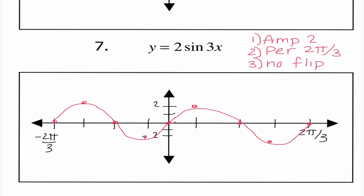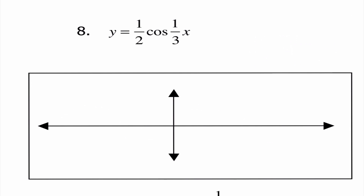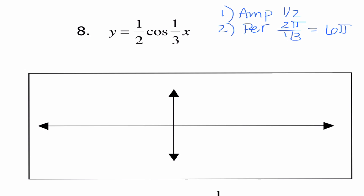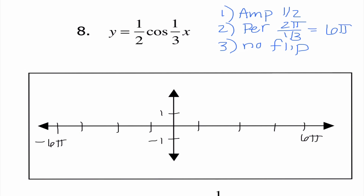This is going to be the only portion of the test where you cannot have your calculator, and it is the only part that is not multiple choice. Our last few: amplitude is 1/2, and the period is 2 pi divided by 1/3, which is 6 pi, because dividing by 1/3 is like multiplying by 3. There is no flip. I mark the axis into fourths, labeling 6 pi and -6 pi, with 1 and -1 on the y-axis. Cosine starts at the amplitude (1/2), then 0, -1/2, 0, 1/2. Working backwards: 0, -1/2, 0, 1/2.